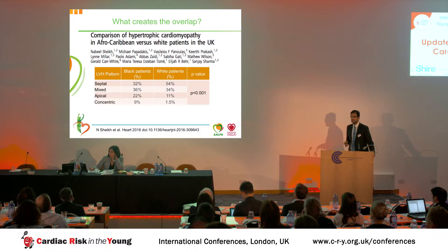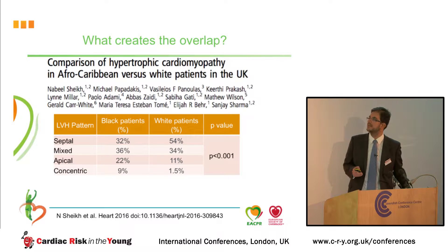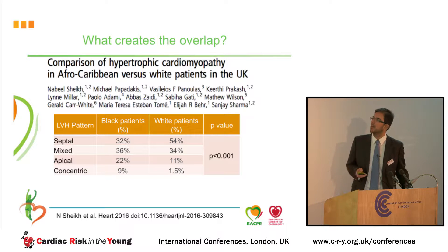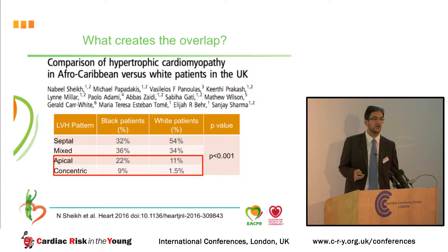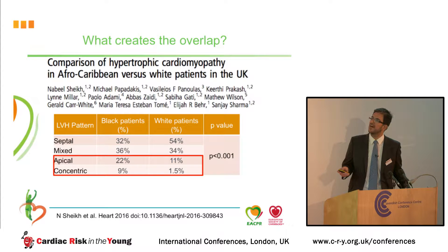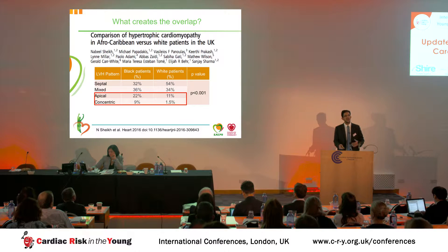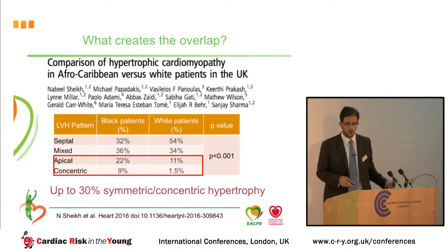The point here is that not all hypertrophic cardiomyopathies will be that obvious. This is a study just published in Heart by my colleague Dr. Nabil Sheikh. He looked at a large population of HCM patients, black and white. If you look at the pattern of hypertrophy at the bottom of the table, some individuals will have concentric hypertrophy — more in the black cohort, about 10%. Some will also have the apical pattern, which is important because it doesn't reflect athlete's heart but can be challenging to identify, particularly on echocardiography. Depending on the study, up to 30% of HCM cohorts may have a symmetric or concentric pattern.